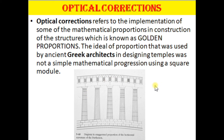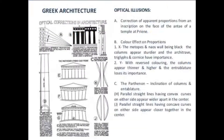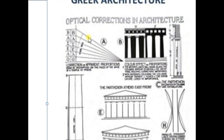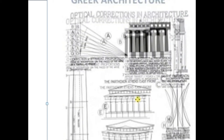They were basically creating an illusion so that the buildings or structures look perfectly proportioned. These are some of the optical correction techniques in architecture — corrections by color and some of the mathematical proportions adopted by Greek architects so that buildings look perfectly proportioned.